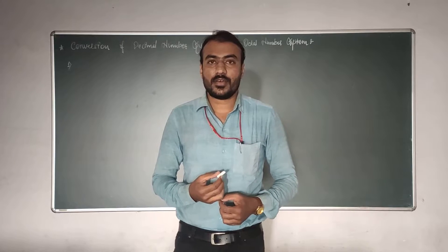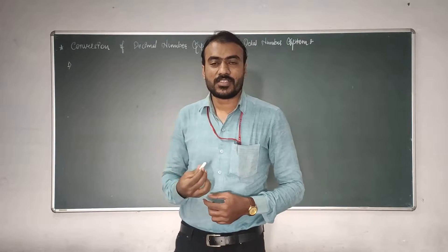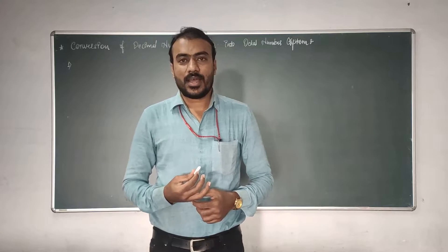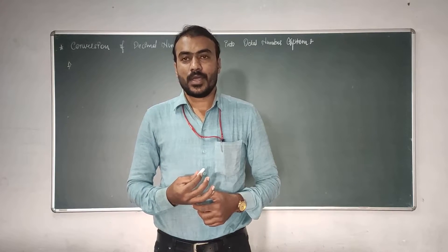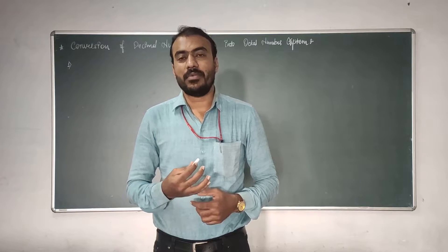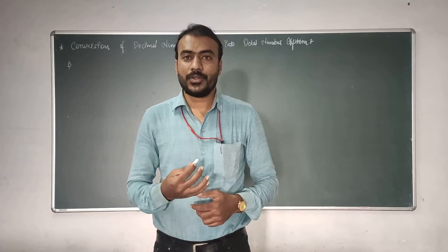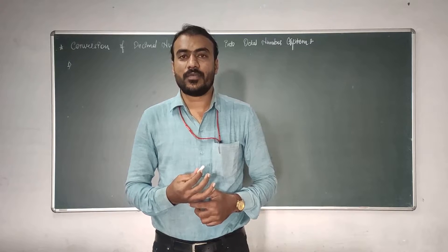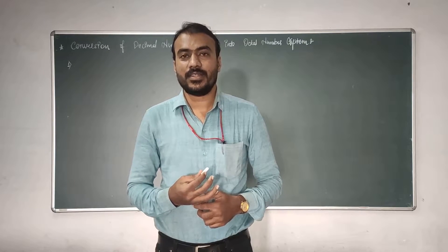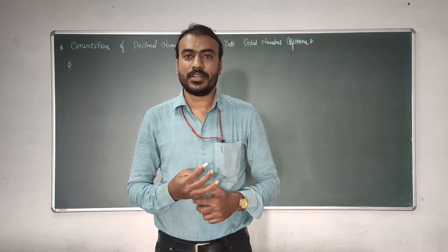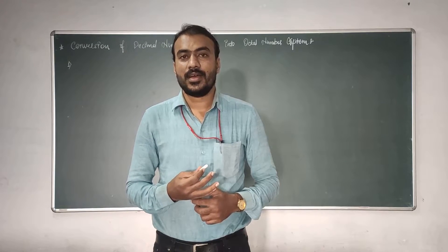If you remember the method by which we had converted a decimal number into a binary number, the method here is very much similar. In the conversion of a decimal number into binary number, we had divided the integer part by 2 and multiplied the fractional part by 2. The reason behind this is the base value of a binary number is 2, hence we divide or multiply by 2.